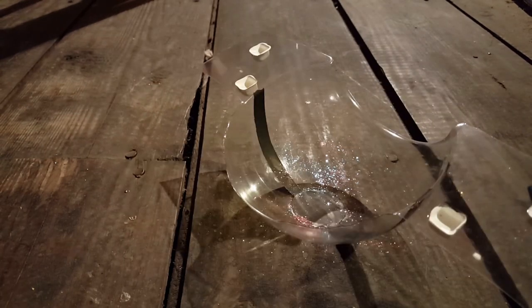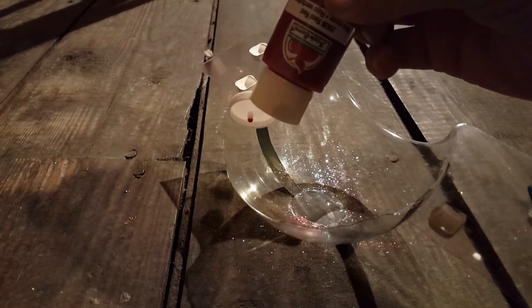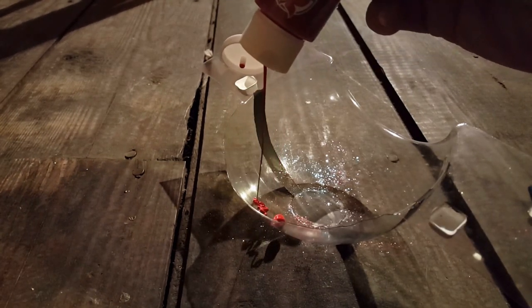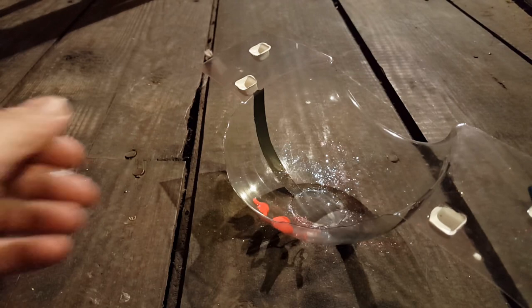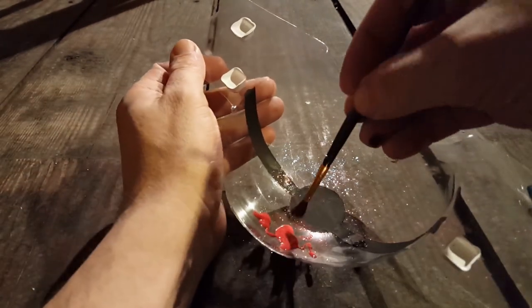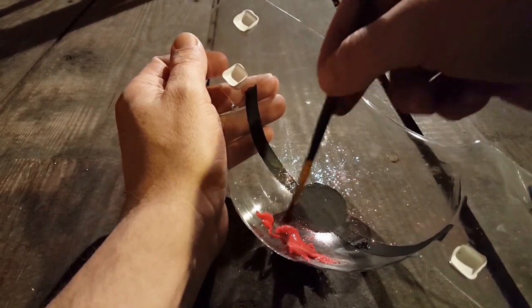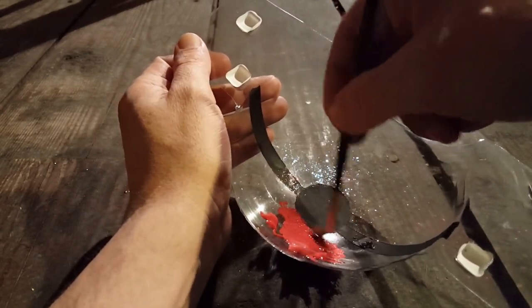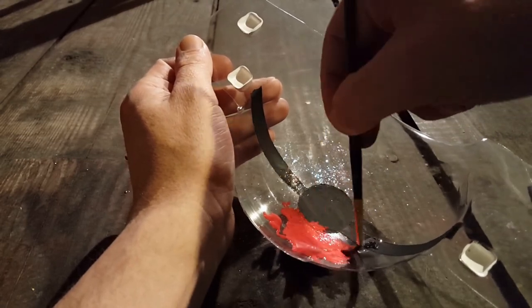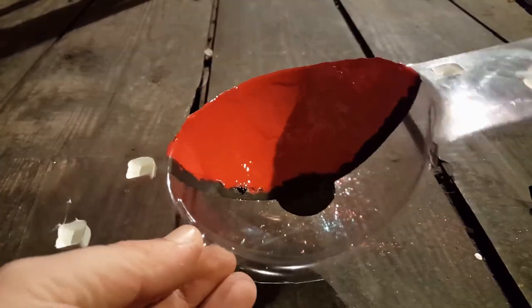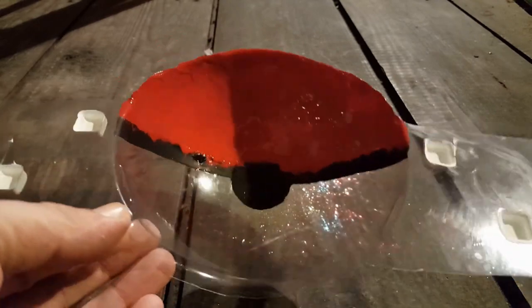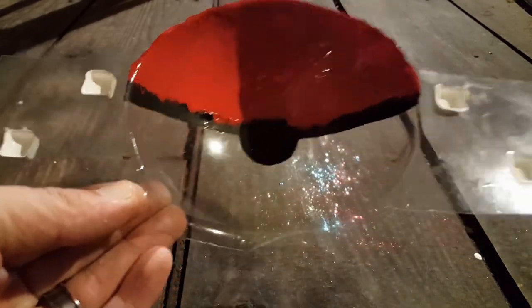All right, so now let's add some red paint, and we'll do this red side first. That should probably be enough. Grab our paintbrush and just start spreading it around. It doesn't matter if we get it on the black here because it won't be seen on the other side. All right, so we have our red done, at least one layer.